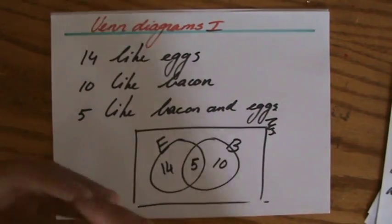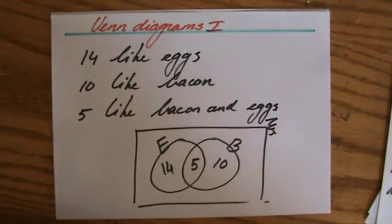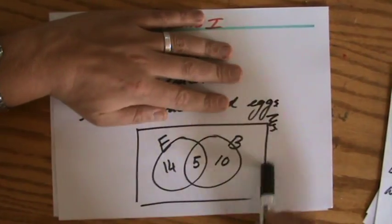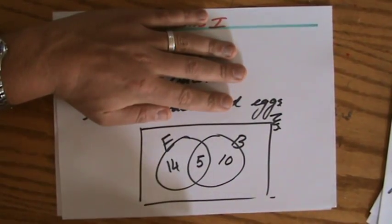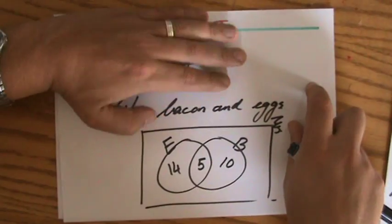Anyway, so it's just a way to represent information so you can have a quick look at your Venn diagram and then say something about the people liking eggs or bacon or eggs and bacon.